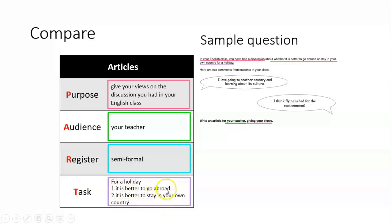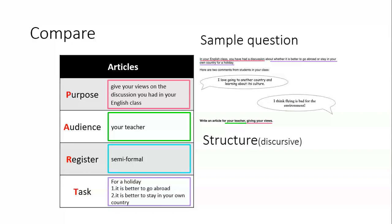The purpose is to give your views on the discussion you had in class — it's important to mention that discussion, and you can invent the details; it's a writing test, not a truth-telling test. Your audience is your teacher, which makes the register semi-formal — relatively formal but not as formal as a university application letter, because you do have a relationship with that person. The structure will be like a discursive essay, similar to an IELTS task: a hook and introduction, then reasons to go abroad, reasons to stay in your own country, and a conclusion with your own opinion.